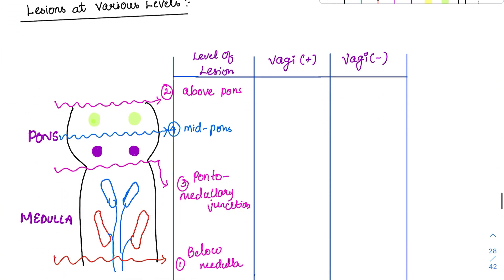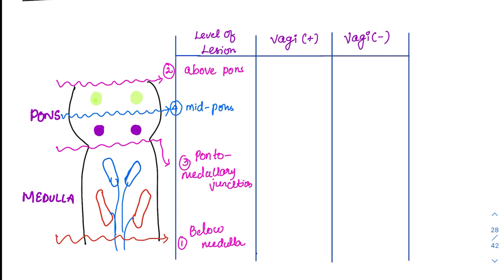Now coming to the lesion sets at various levels. Previously, scientists identified the function of each region by cutting at various levels — these are experimental setups, and since MCQs ask about them, they are important for us too. Four lesions were done and the effects studied, plus they examined what happens when the vagus is present versus when it is cut. The vagus senses inspiration and sends impulses to the apneustic center to stop excessive inspiration.